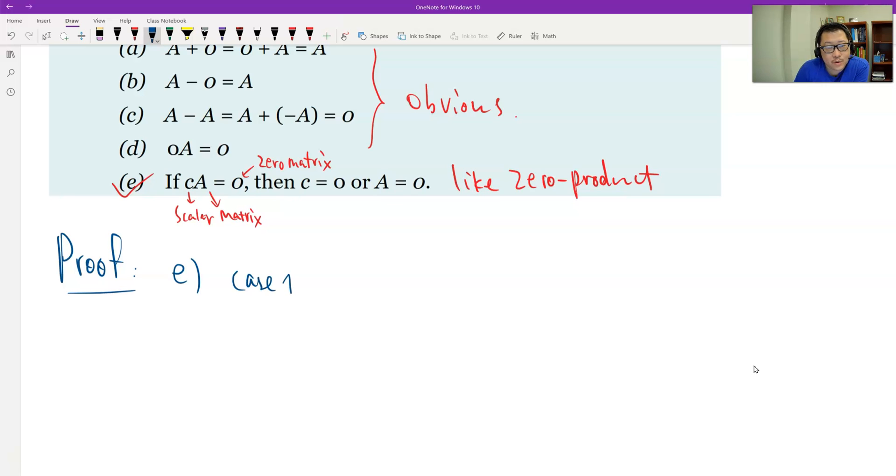So let's just look at case one. C is a scalar number equals zero. That's okay. Why? Because zero times the matrix is zero, right? So that's okay. So C equals zero is possible. And then case two.